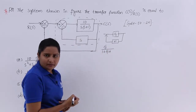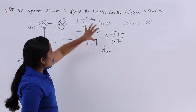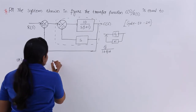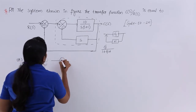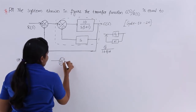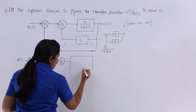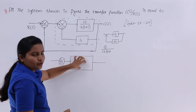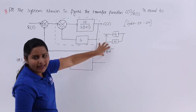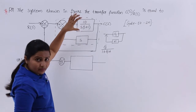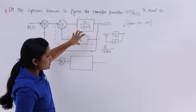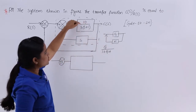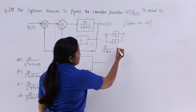Based on the formula, I am going to reduce the two blocks. Using the formula G/(1+GH), I will make the inner feedback loop into a single block. For the first loop, H is equivalent to S and G is equivalent to 10 divided by S(S+1). I am now substituting these values into the formula.